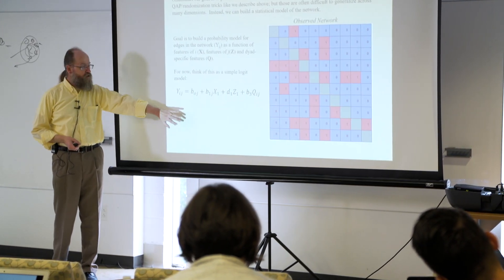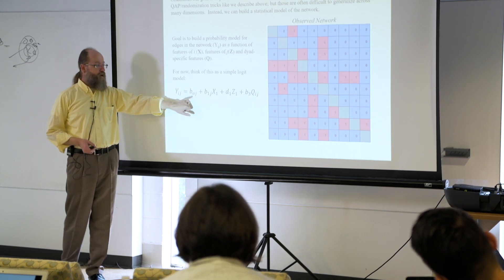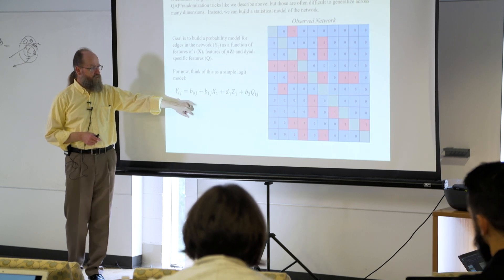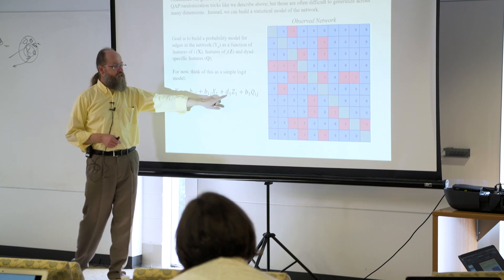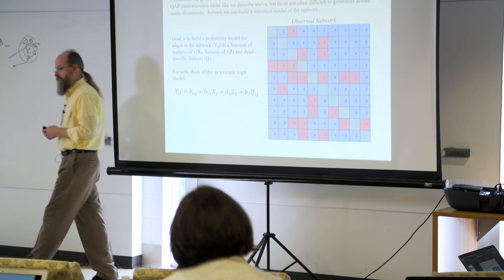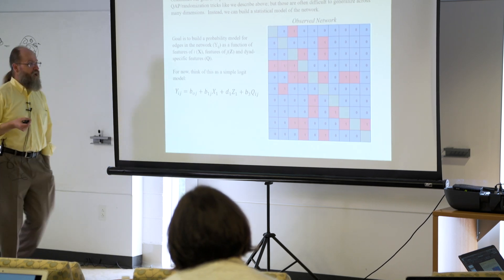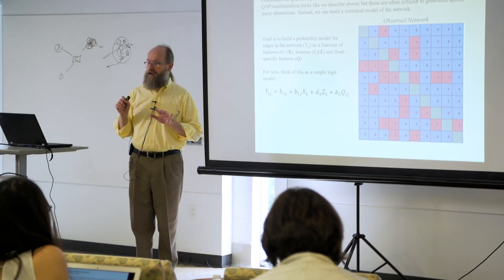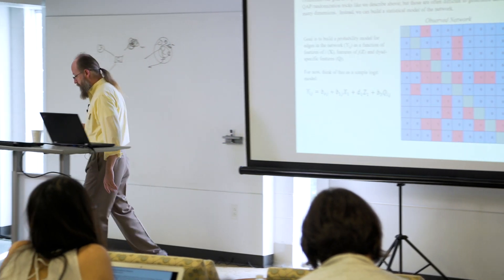For most of us, this is a pretty common problem — something like a logit model. You can imagine the tie between I and J as a function of some overall intercept, a sender effect, a receiver effect, a dyadic effect, and maybe something specific to a subset of nodes. If you set aside standard errors for a moment — because we'll fix those with the permutation set — this really is just a logit problem.